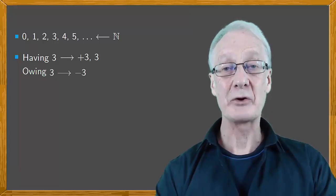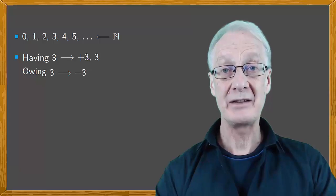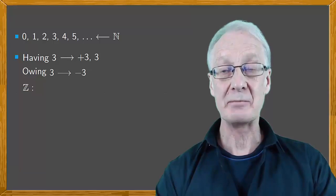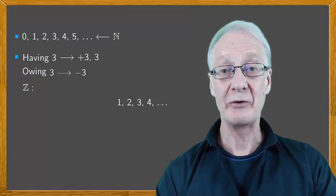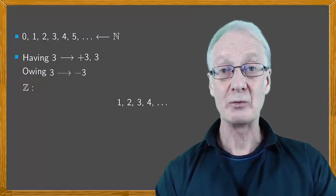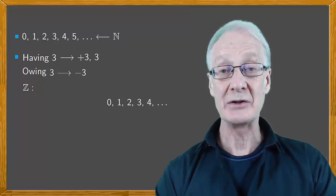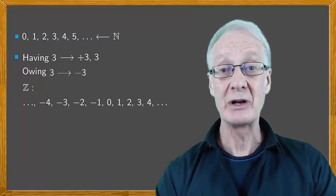In this way, we've created a new number set, the integers, which we denote by the letter Z. It consists of the positive integers: 1, 2, 3, 4, etc., to the right of zero on the number line, and the negative integers: minus 1, minus 2, minus 3, minus 4, and so on, to the left.